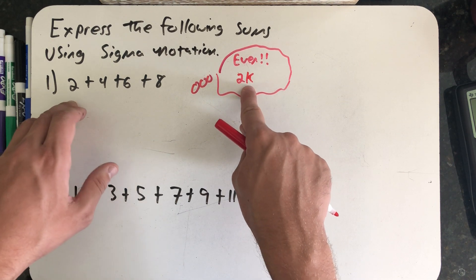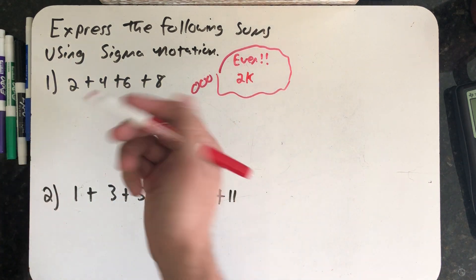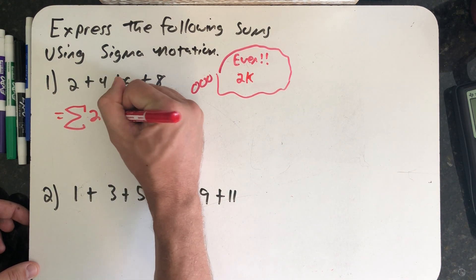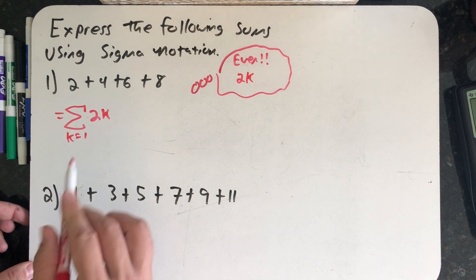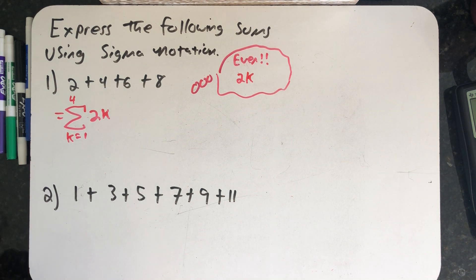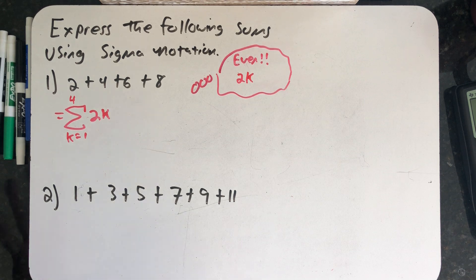And all of a sudden this formula is starting to look pretty good already for the kth term formula because if I plug in a 1 for k I get out 2, if I plug in a 2 for k I get 4, and so on and so forth. I think that actually does it. That's my kth term formula and I need to start at 1 and end at 4. There is this sum expressed in sigma notation.